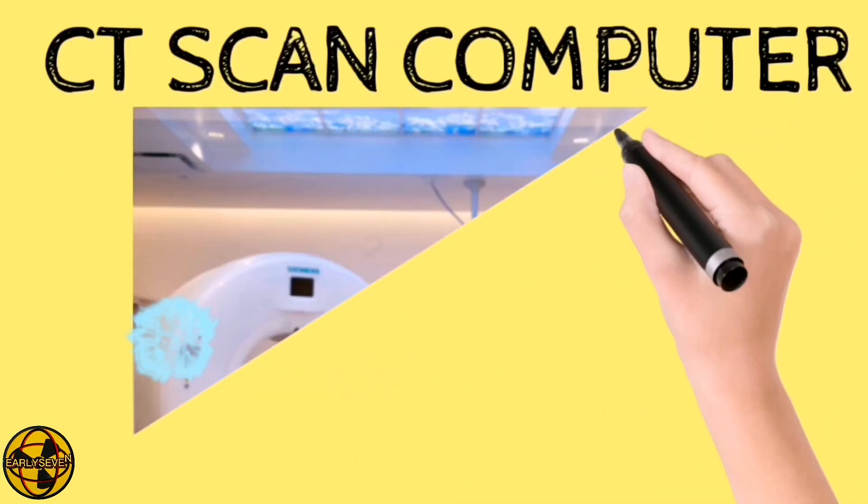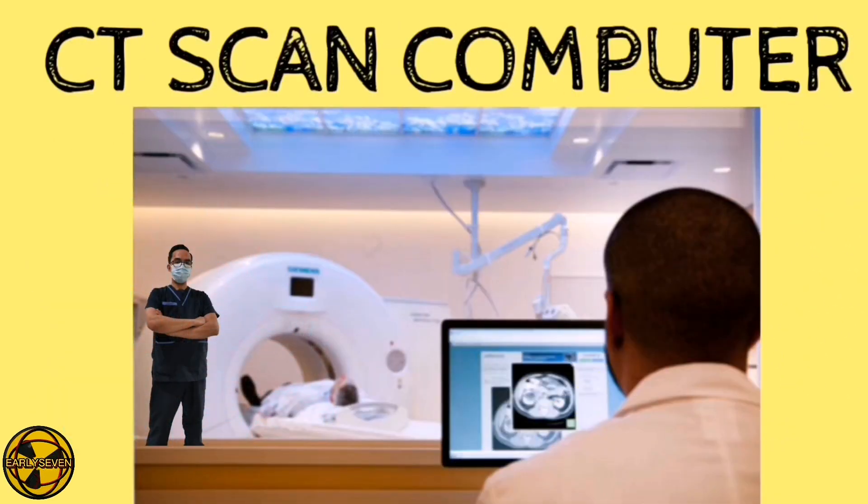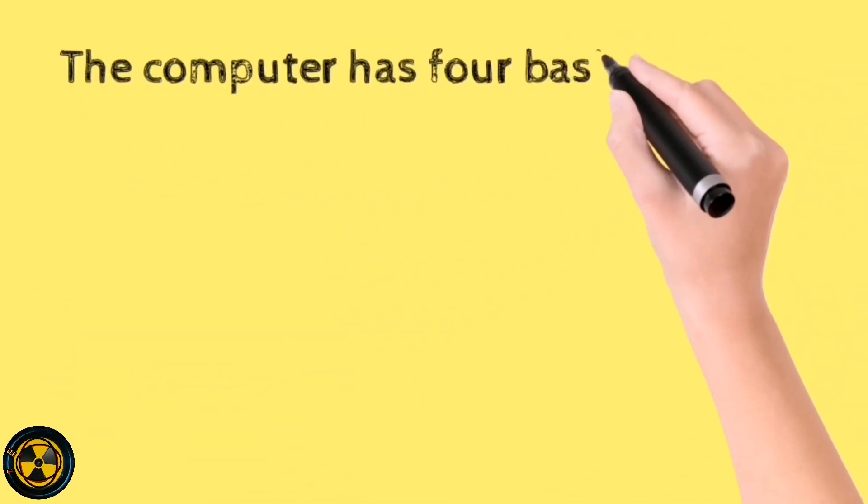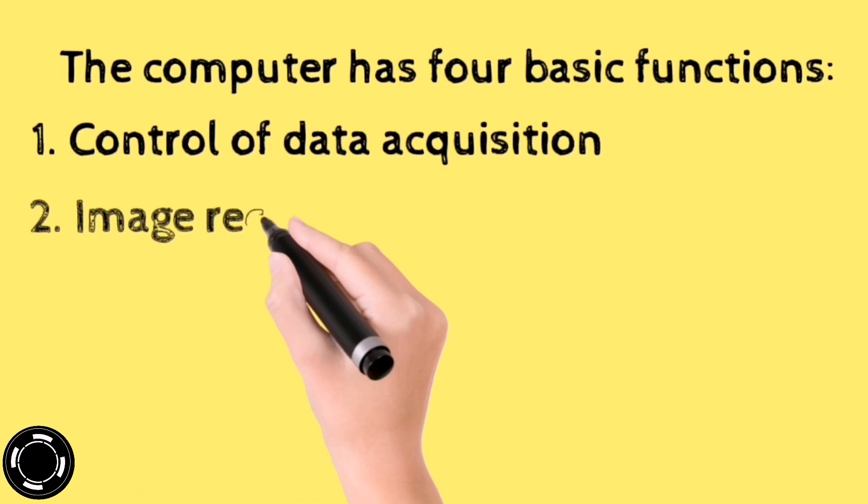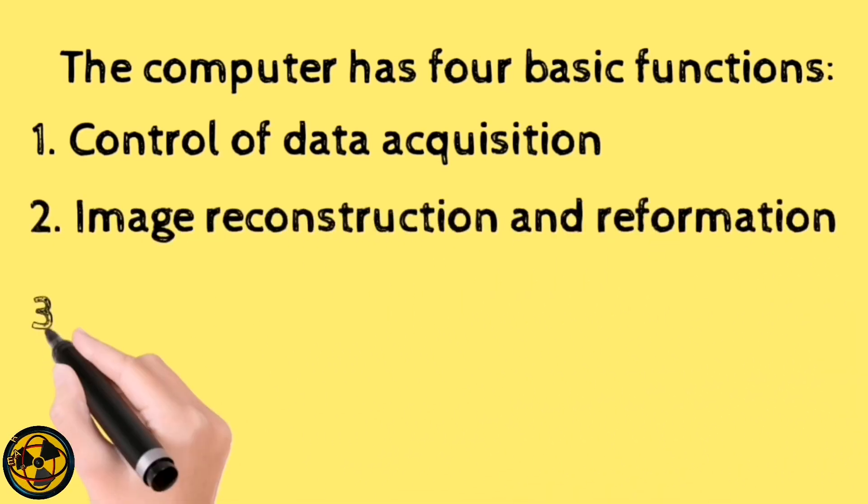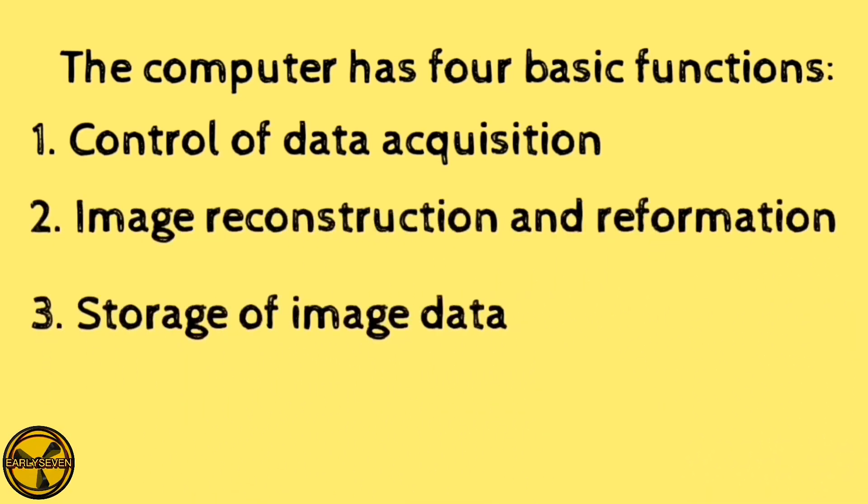The last component of a CT scanner is the computer. The computer has four basic functions: control of data acquisition, image reconstruction and reformation, storage of image data, and image display.